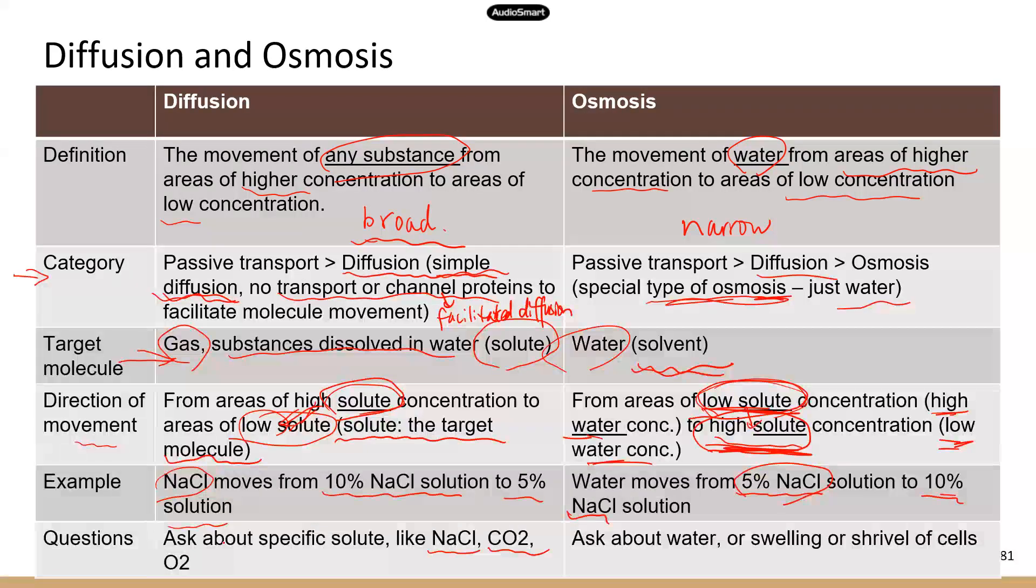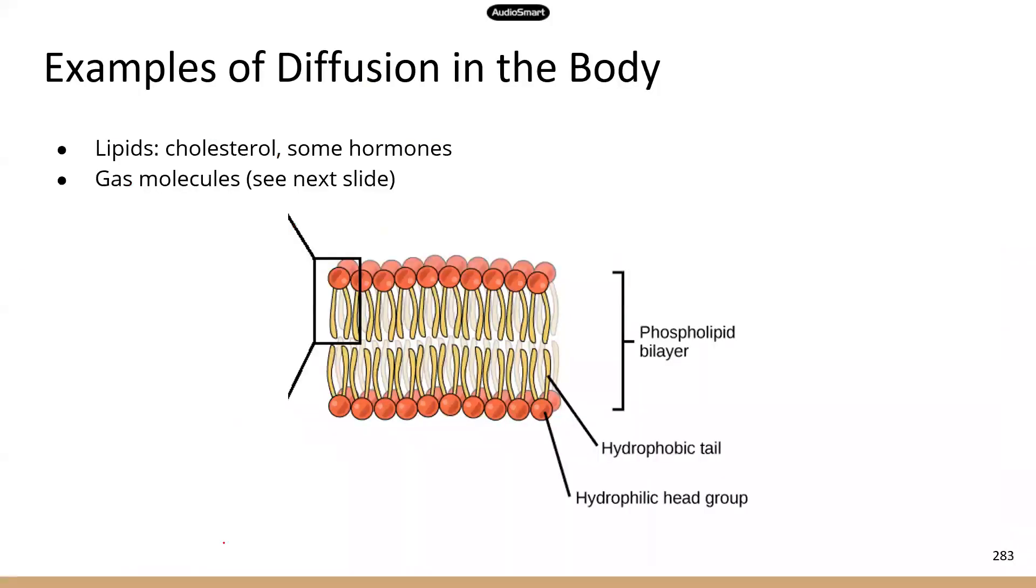Okay, now this is a quick overview of the differences between diffusion and osmosis. Now let's look at some real examples in our body to help you understand these two processes. So first we're going to look at diffusion.